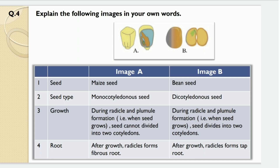Now see question four: Explain the following images in your own words. There are two images — image A and image B. For image A the name of the seed is maize seed and for image B the name of the seed is bean seed. For image A the type of seed is monocotyledonous and for image B the type of seed is dicotyledonous.